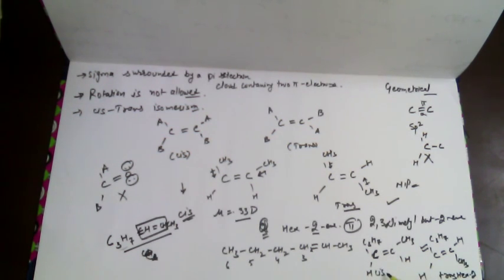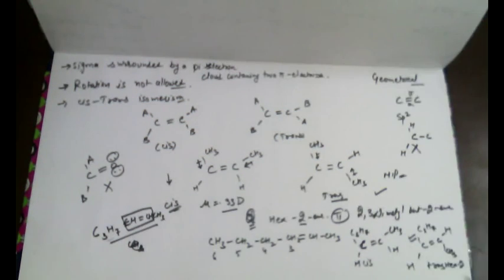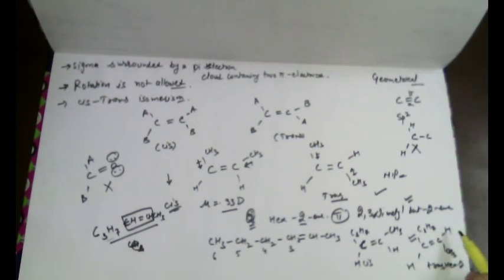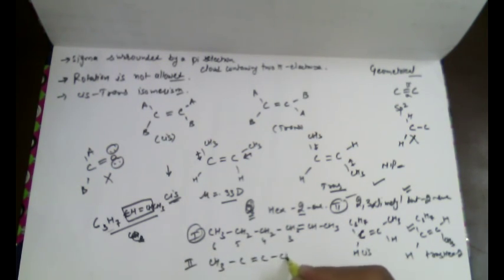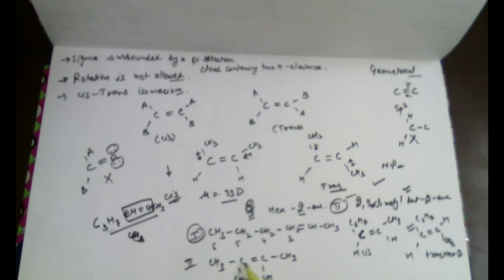For 2,3-dimethylbut-2-ene, the same methyl group is attached to both double bond carbons. Locating the double bond in the molecule: at positions 2 and 3, both double bond carbon atoms each have the same methyl group (CH3) attached. Therefore, since the same methyl group is attached to both double bond carbon atoms, geometrical isomerism is not possible for 2,3-dimethylbut-2-ene.